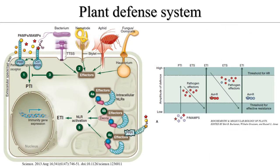I will explain what PTI and ETI are. Pathogens have special molecular structures, we call PAMPs or MEMPs. If the pathogen approaches the plant, the pattern recognition receptors present in the plant recognize it, and as a result, the plant secretes ROS or antimicrobial substances that kill the pathogen. These reactions are called pattern-triggered immunity.